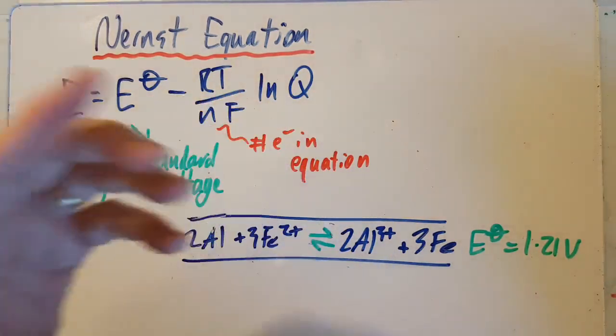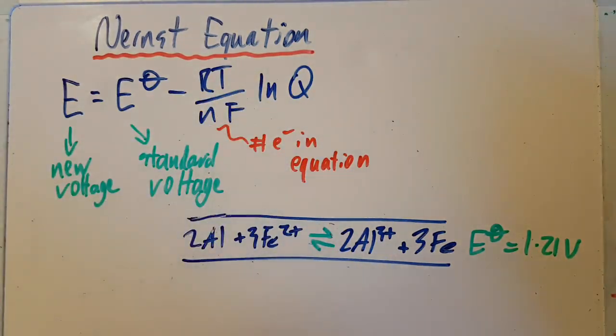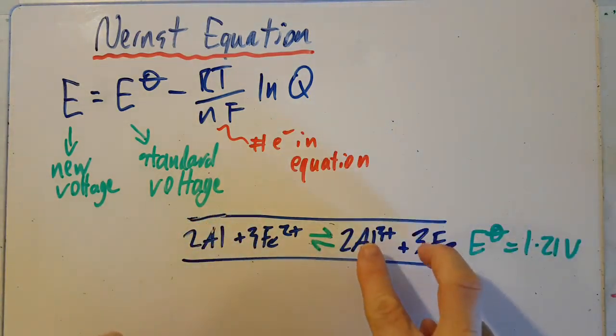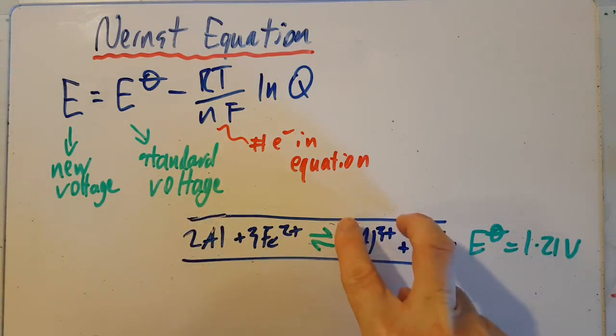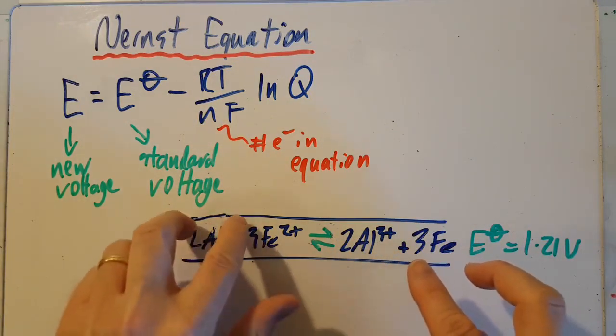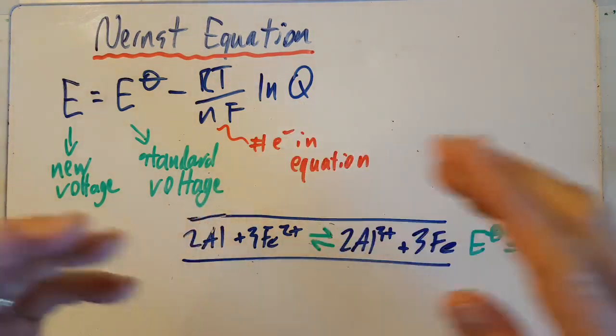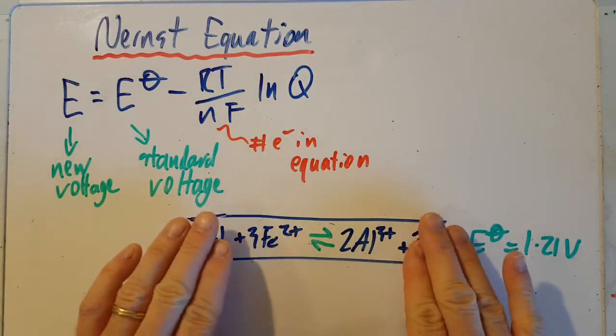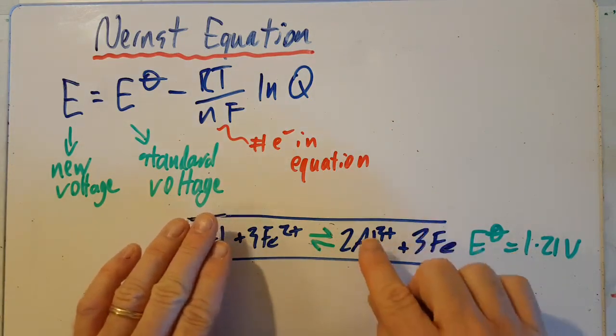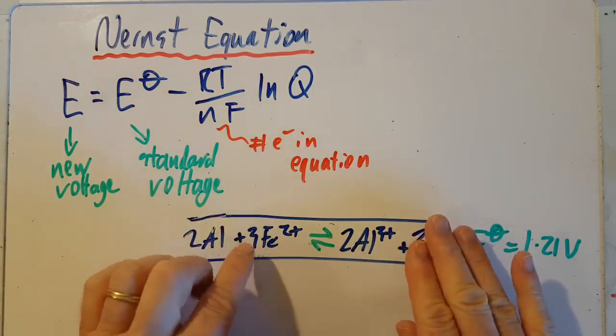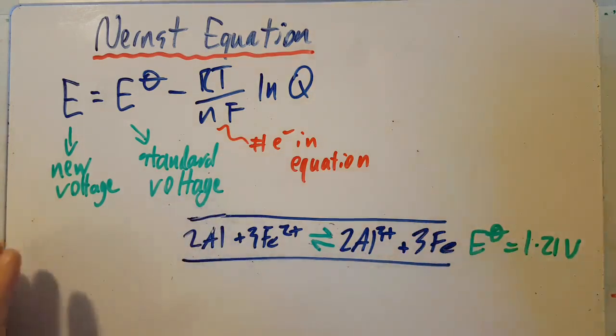And ln Q, Q is the reaction quotient. If you remember, that was the equilibrium constant but using non-equilibrium values. So that would be this raised to the power of those divided by that raised to the power of those. Well, it's not quite so simple. When it comes to Q and Kc, you're allowed to ignore the solids. So it's actually going to be the concentration of this squared (products) divided by the concentration of that cubed (reactants).